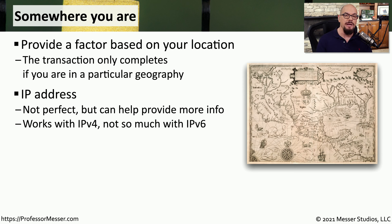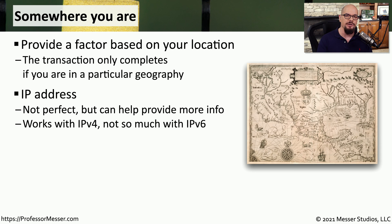We can sometimes use IPv4 addressing to determine where a person might be, although this process is a bit imprecise and may give us incorrect information about what country a person may be in. This is a bit more difficult with IPv6, where specific country associations aren't available, but this can give us a good amount of information to help make decisions on whether a user is authenticated or not.